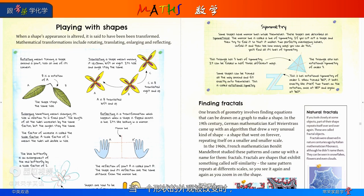When a shape's appearance is altered, it is said to have been transformed. Mathematical transformations include rotating, translating, enlarging, and reflecting.